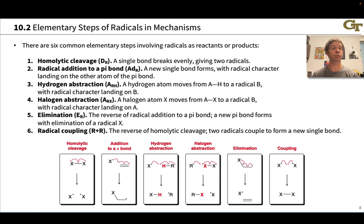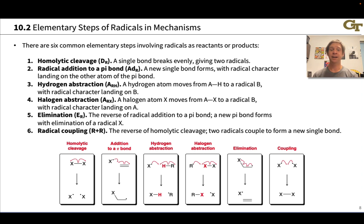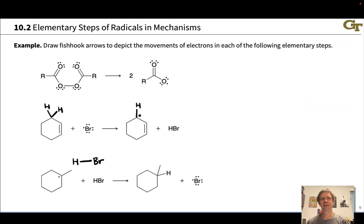There's elimination, which is the reverse of radical addition to a pi bond — eliminating a radical and creating a pi bond. And then there's radical-radical coupling, R plus R, which is a very rapid step that establishes a new single bond from two radicals colliding. These elementary steps are building blocks in radical mechanisms, just as ionic mechanisms have their allowed moves. Every radical mechanism is made up of a sequence of these six steps. Let's take a look at these elementary steps, add fishhook curved arrows to show electron movements, and label them into one of those six categories.